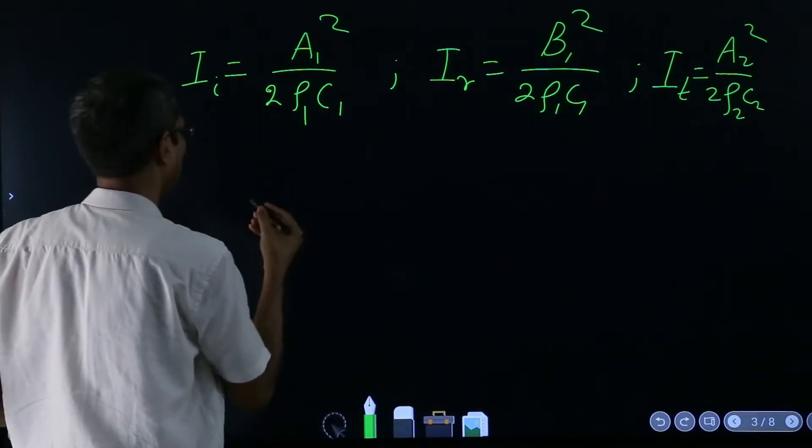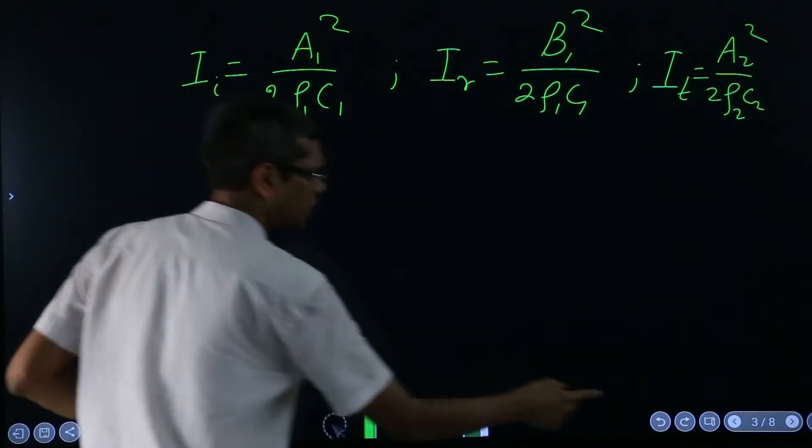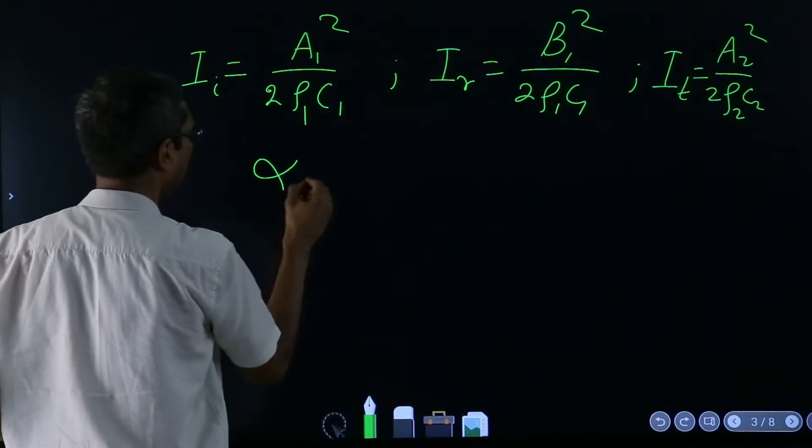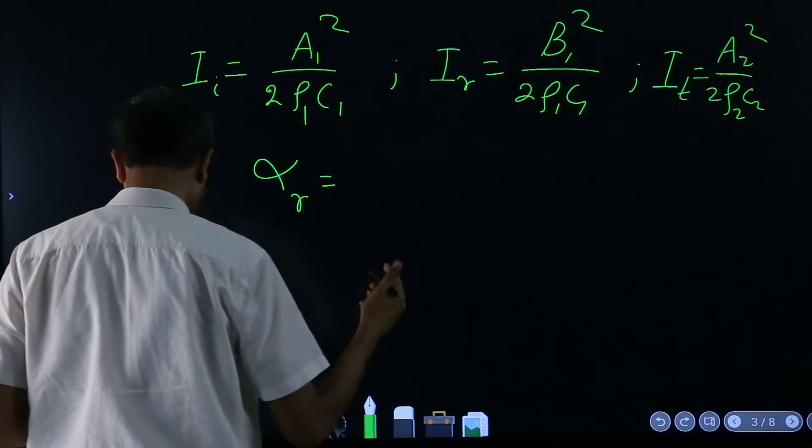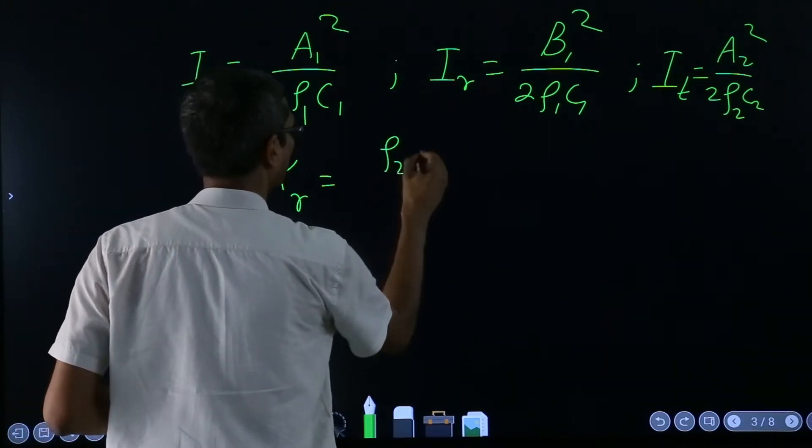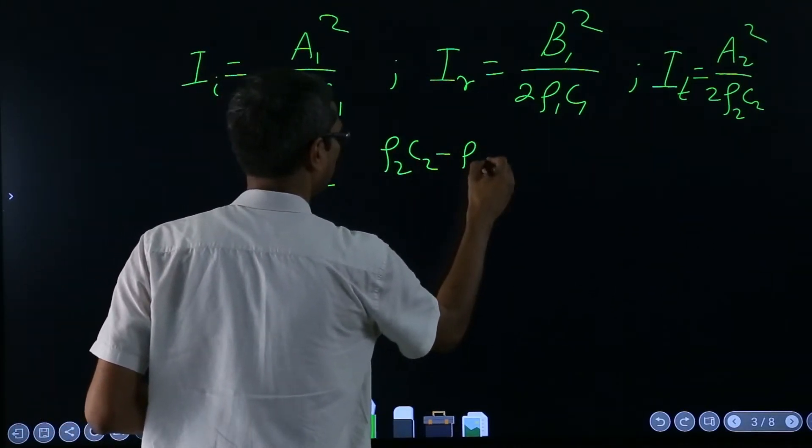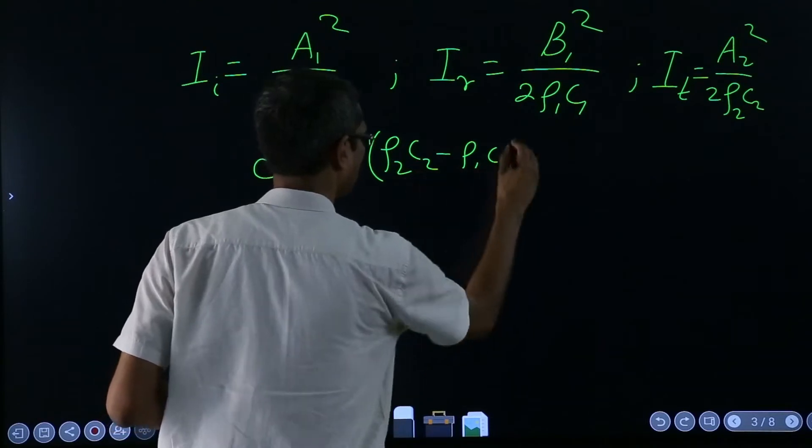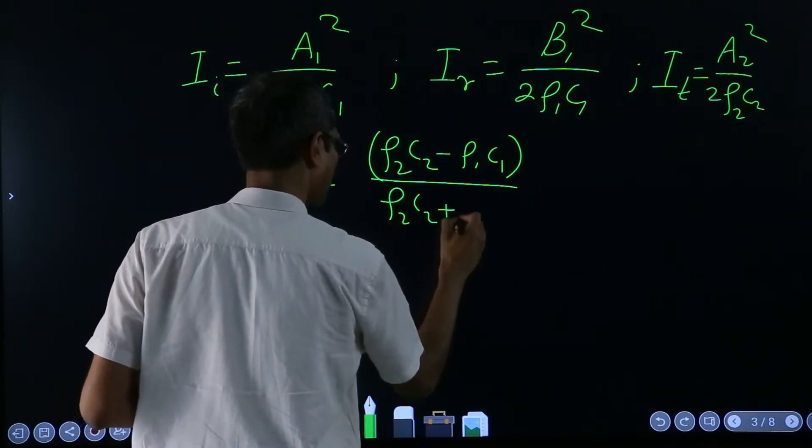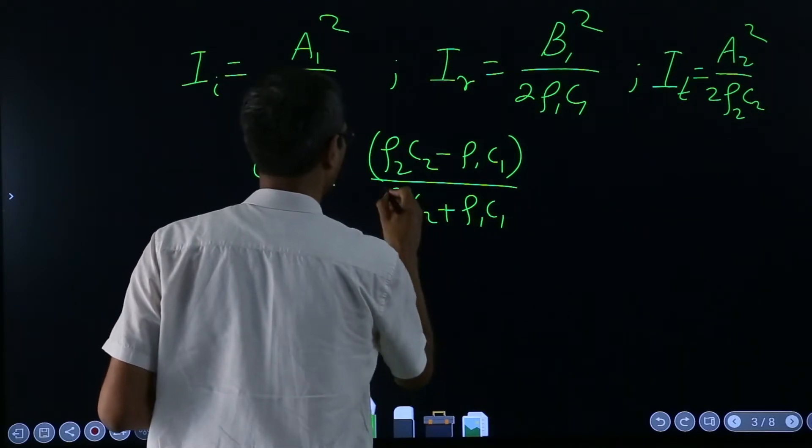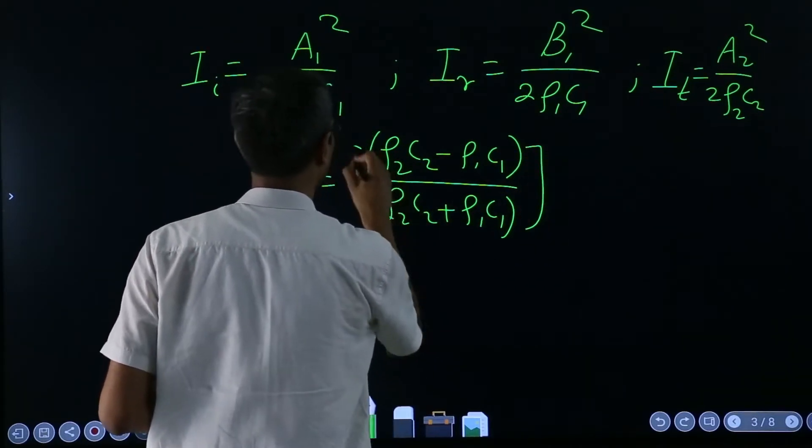Then we derived, at least I wrote, that alpha reflection we calculated it to be (ρ₂c₂ - ρ₁c₁) over (ρ₂c₂ + ρ₁c₁), this whole square.